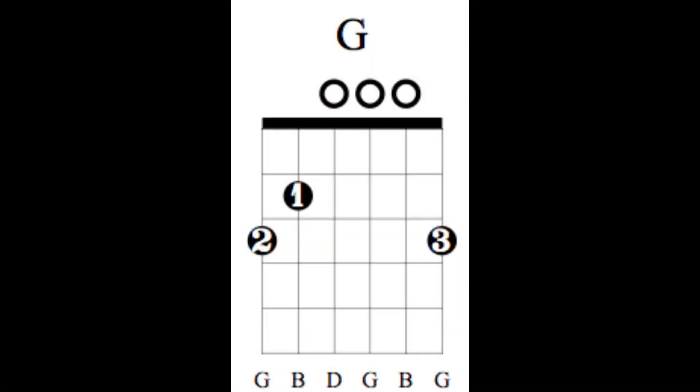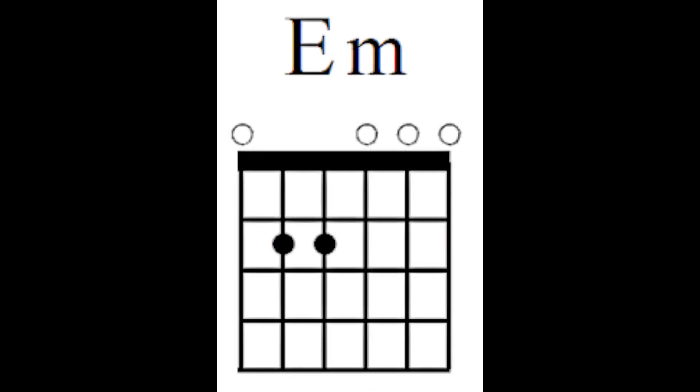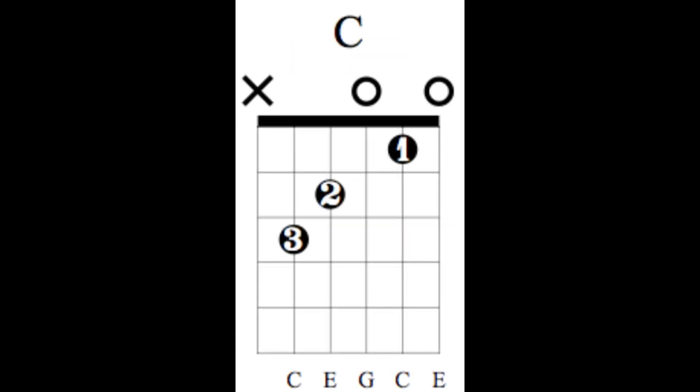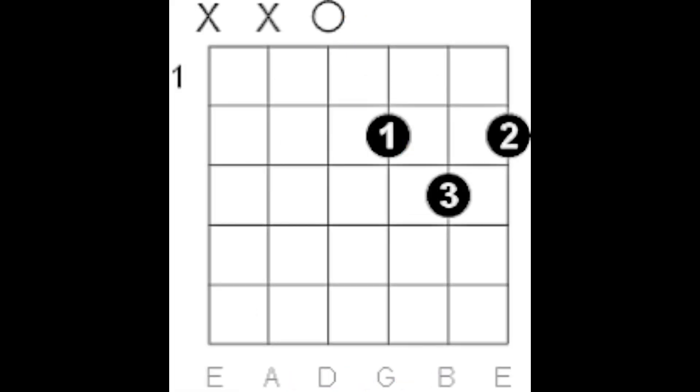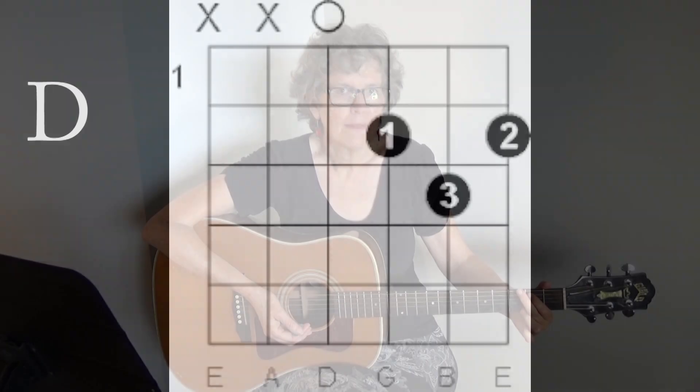This first chord progression is G, E minor, C, and D. Here are the chord diagrams. This chord progression is great for a lot of different songs, including 'I Will Always Love You.' It's also good for 'Rocky Mountain High' and a ton of other songs. I teach both of those in separate lessons and I'll put a link underneath this video.